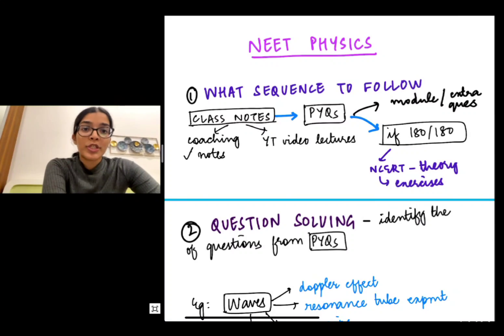So let's start off with the first question which is what sequence to follow. I've divided the students into two categories: those who go to coaching institute and those who do not.